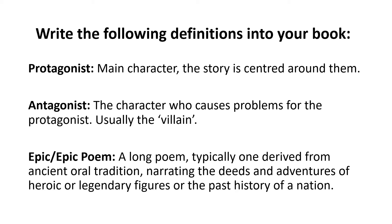A hero is often a type of protagonist. A protagonist is the literary term for a main character that the story is centred around. On the other hand, we also have an antagonist — the character who causes problems for the protagonist, usually the villain. And we have a final definition: an epic poem. Beowulf is an example of an epic poem — a long poem, typically one from ancient oral tradition, narrating the deeds and adventures of heroic or legendary figures.